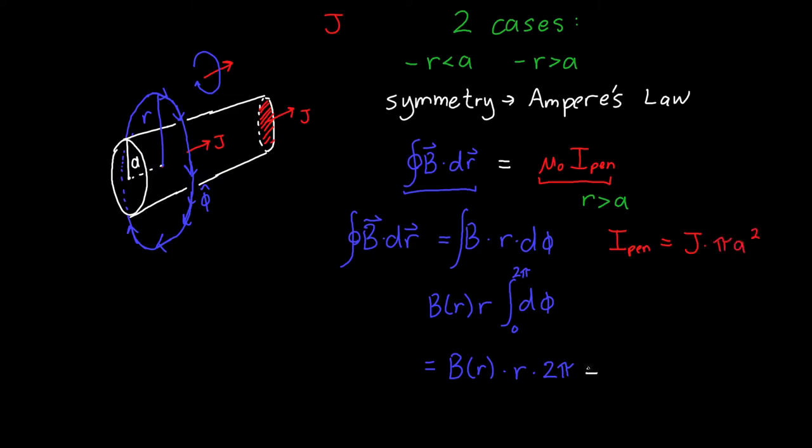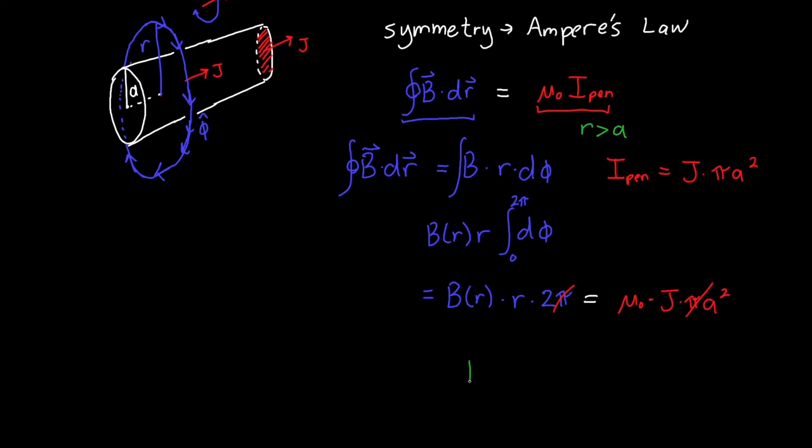And so if we equate these two sides, B of r times 2 pi r is equal to mu naught times i-pen, which is j times pi a squared. And so the pi's cancel, and we're left with our answer for B as a function of r is equal to mu naught j times a squared divided by 2r.